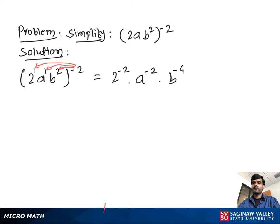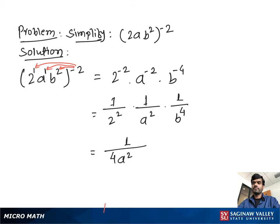We take reciprocals to make the exponents positive: 1 over 2 squared, times 1 over a squared, times 1 over b to the 4th. Then we get our final answer, which is 1 over 4a²b⁴.